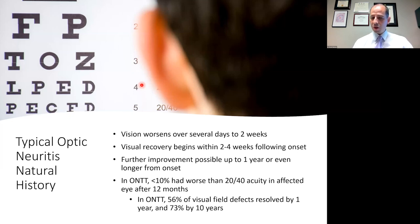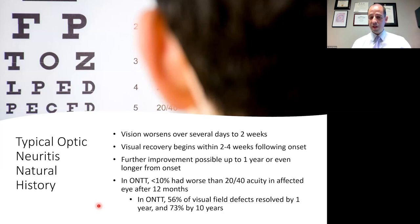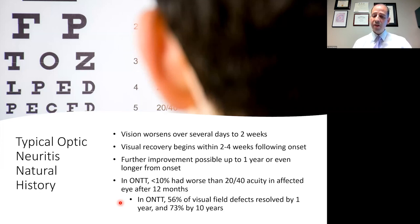In the optic neuritis treatment trial, we learned that these patients got a lot better with their vision — that is a cardinal feature of optic neuritis. In fact, less than 10% had a visual acuity worse than 20/40 after one year, meaning greater than 90% of patients had vision better than 20/40 in the affected eye. Another interesting finding was that 56% of the visual field defects resolved after one year and 73% by ten years, implying that some small amount of additional visual field improvement happens even years after optic neuritis onset.